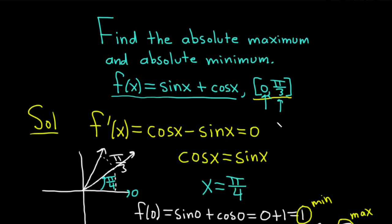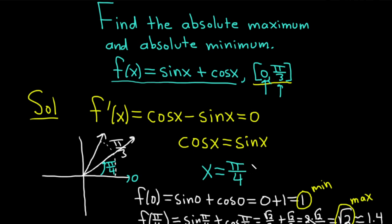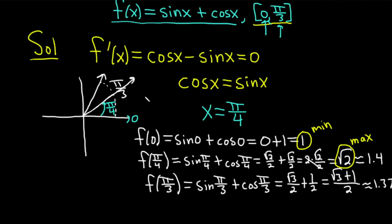We used some trig knowledge and got pi over 4. Make sure pi over 4 is between 0 and pi over 3 — and it is. After you find your critical numbers, you take your critical numbers, which in our case was just pi over 4, and your endpoints, 0 and pi over 3, and go back to the original function. One of the most common mistakes is people plug into the derivative instead. The biggest number you get is your absolute maximum, and the smallest number is your absolute minimum.